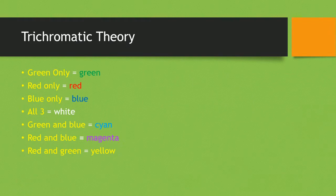It's not going to be a very long video. We left off at the trichromatic theory, which is basically about Iodopsin having three different forms of wavelengths: green, red, and blue. These allow for different colours to be distinguished. For example, green only Iodopsin you'll see green; red only, you'll see red; blue only, you'll see blue. If all three are stimulated it will be white; green and blue gives cyan; red and blue gives magenta; and red and green gives yellow.